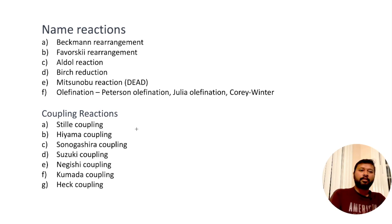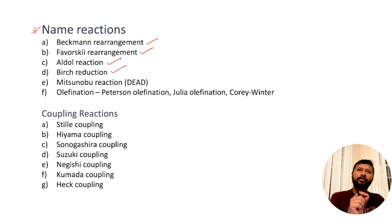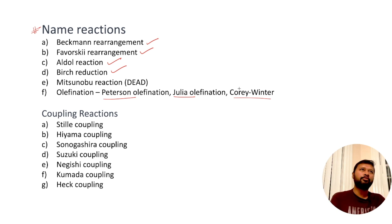Name reactions are next. There are hundreds of name reactions in organic chemistry, but the most frequently asked ones include Beckmann rearrangement, Favorsky rearrangement, Aldol reaction, Birch reduction — where you have to identify that the Birch reduction is actually being performed — then Mitsunobu reaction, and olefination reactions including Peterson reaction, Julia reaction, and Corey–Schlosser reaction. You should know how to differentiate between them.